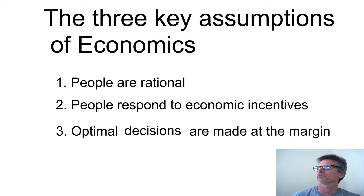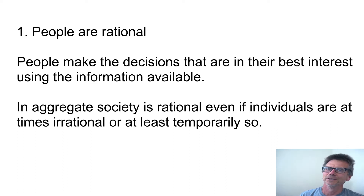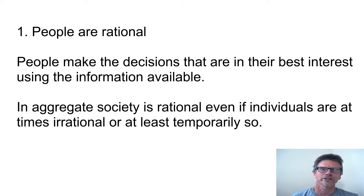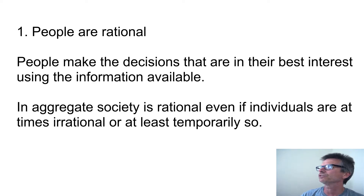Let's take a look at 'people are rational.' A lot of people say this isn't true, but in economics we're talking generally, we're talking in aggregate. For example, people don't drive on the left-hand side of the road — unless they're in England or Australia. So generally, people make rational choices and decisions that are in their best interest using information available.